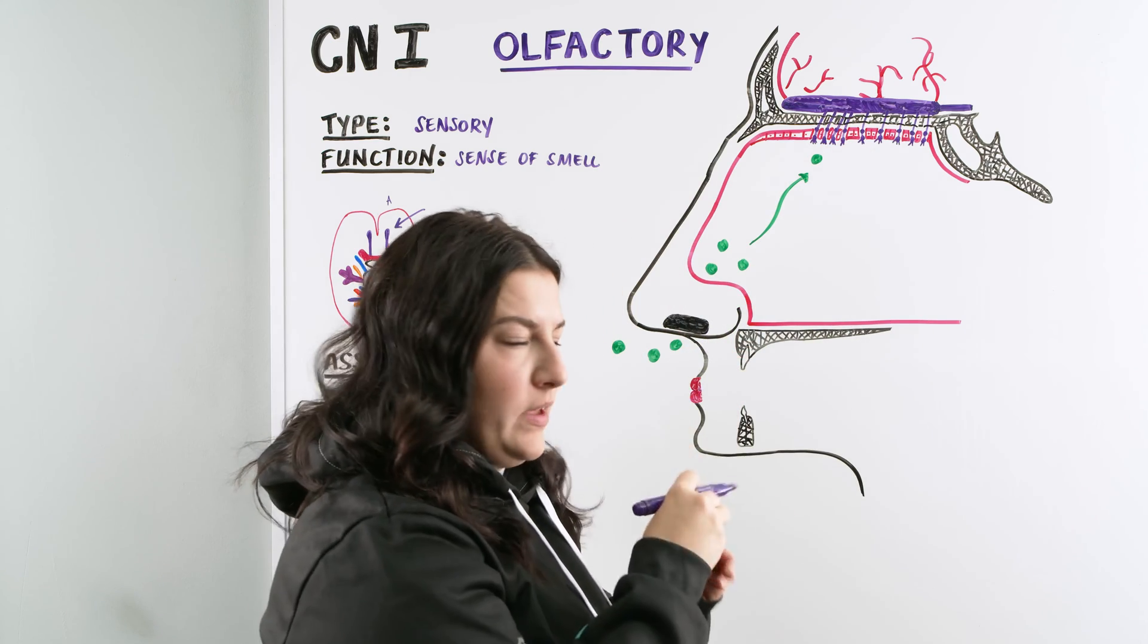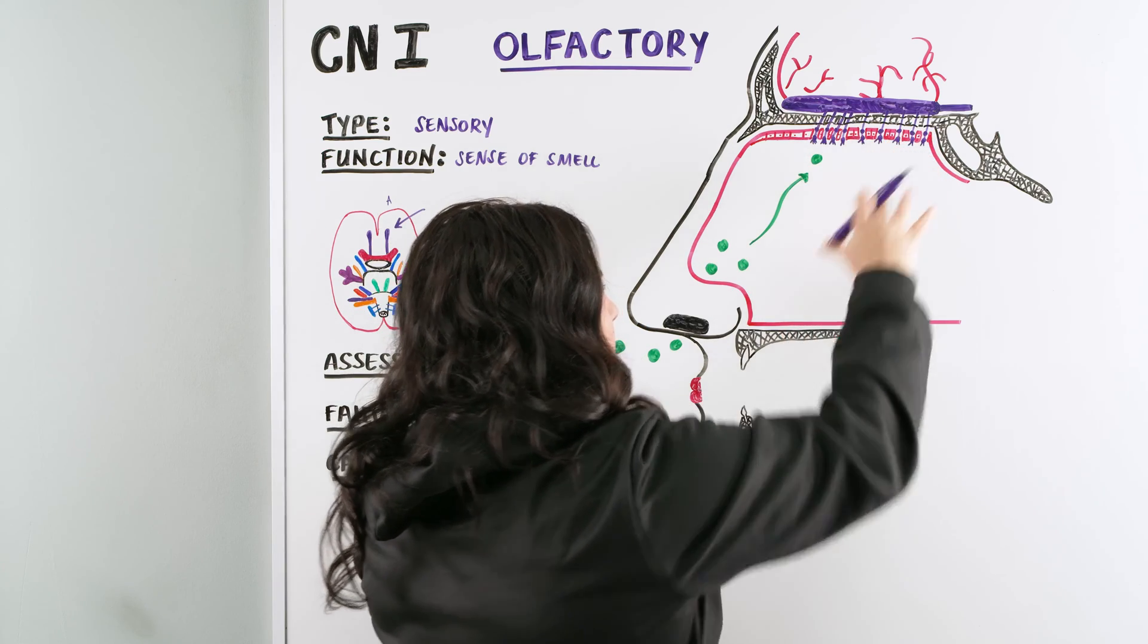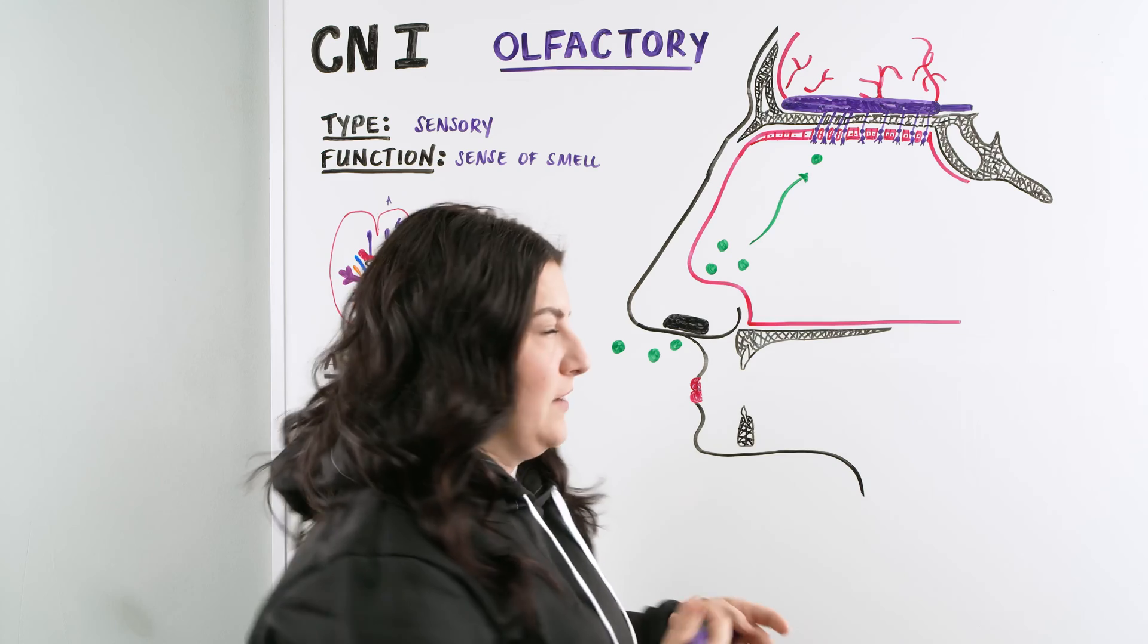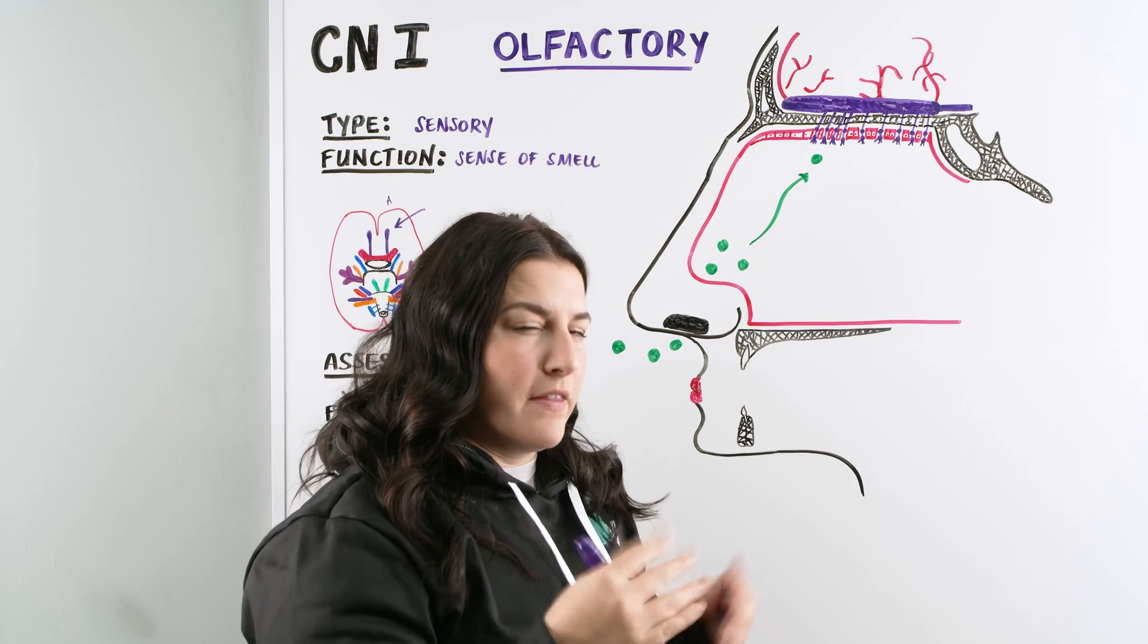There's little receptors on there, the odorants go on there, they're able to tell us. And there's different types of receptors here so that we have this vast array of smells that we can identify. But for this diagram, I just drew them all in the same color. Just understand that there's many different ones.